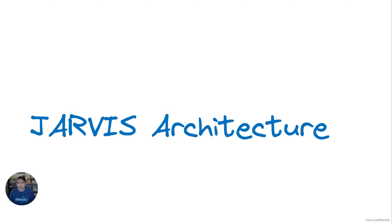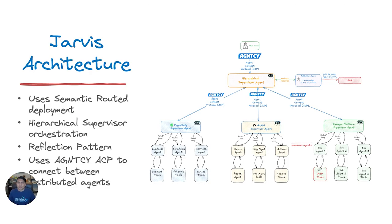Now let's take a look at how the Jarvis multi-agent system is architected. Jarvis architecture leverages semantic routing deployment and also utilizes hierarchical supervisor orchestration to manage complex workflows and make it extensible to plug and play multiple agents. A key feature of Jarvis is a reflection pattern that allows for runtime evaluation to adapt to incoming tasks. More importantly, Jarvis uses the Agent Connect Protocol, or ACP, to establish agent-to-agent collaboration.